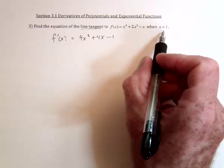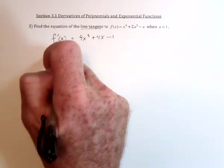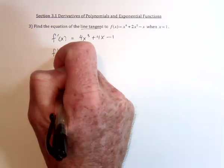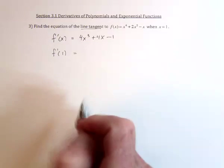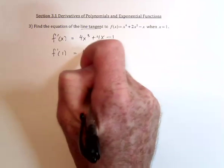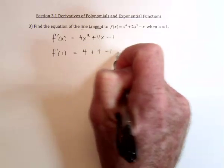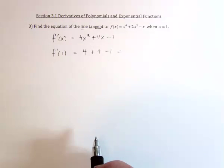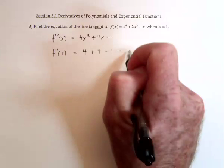The next thing to do is find out at that particular point how much is the slope of the tangent line. So the derivative at 1 is going to be 4 plus 4 minus 1. So the slope is 7.